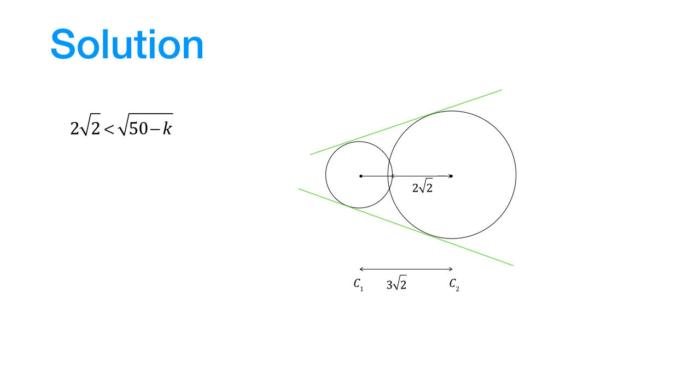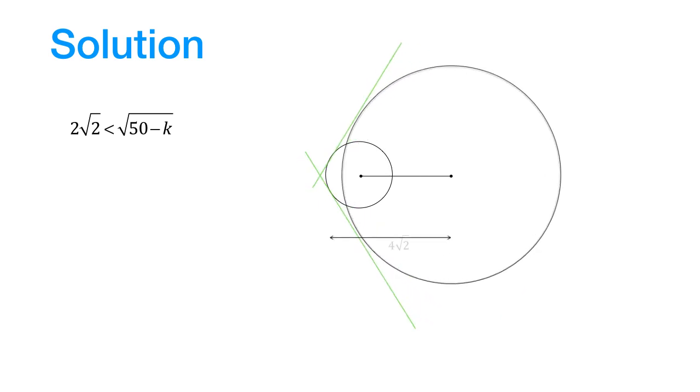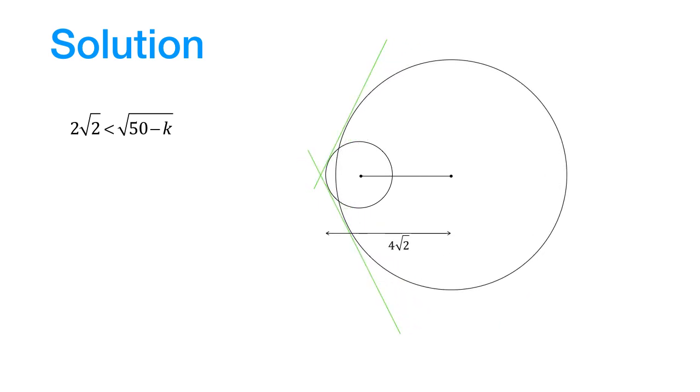Now circle c2 can expand further and still intersect with c1. Under this condition clearly the radius of circle c2 would be less than 4 root 2. So let's write that down. Now we have this inequality.